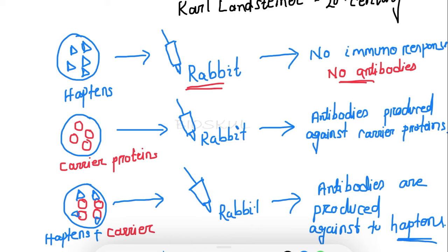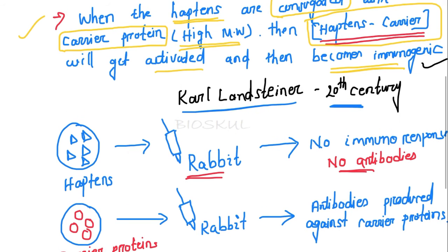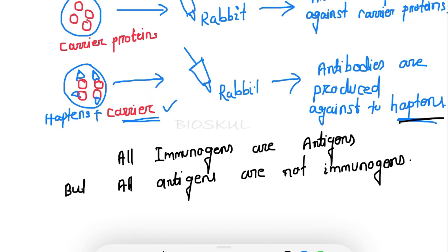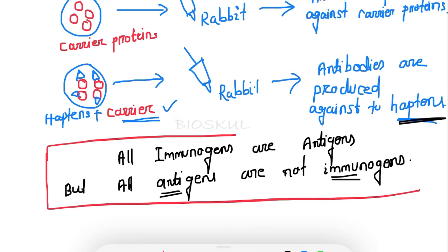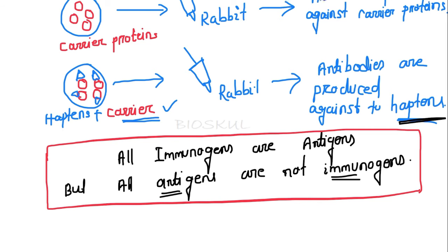Haptens by themselves are not able to induce an immune response. They are able to do so only when combined with a high molecular weight protein called the carrier protein — at that point they become immunogenic and produce antibodies. This concept was developed by Karl Landsteiner in the 20th century. Hapten itself is an antigen but not an immunogen. All immunogens are antigens, but all antigens are not immunogens.